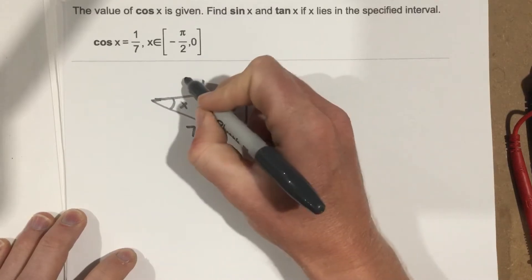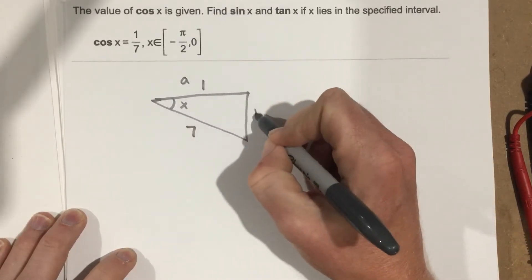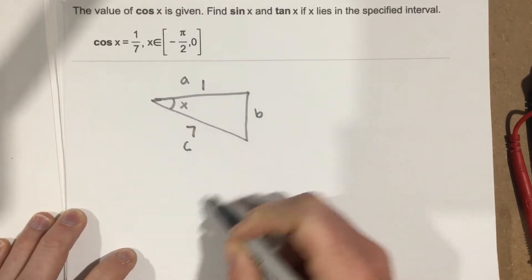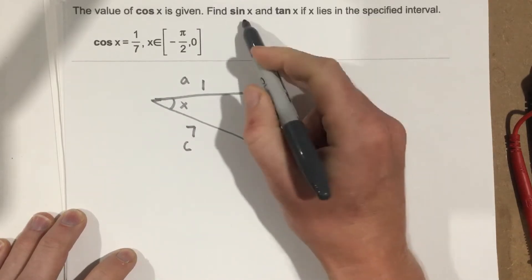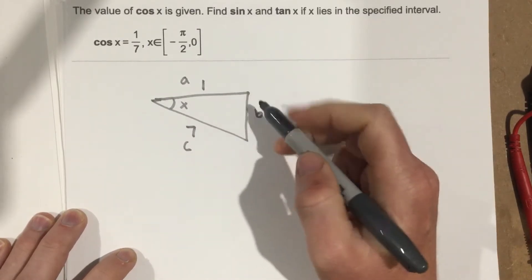We'll call this A, B, and C. We need to find the B side so we can find sine x and tan x. So we've got to use the Pythagorean Theorem.